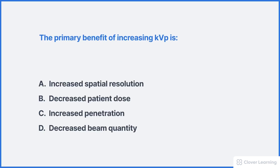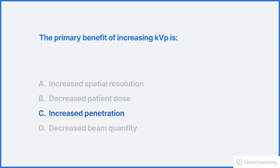Let's check our understanding of kVp's effect on beam quality. The primary benefit of increasing kVp is increased penetration. None of the other answer options are true. If we increase kVp, this has no effect on spatial resolution — spatial resolution refers to the sharpness recorded in the radiograph. Increasing kVp actually results in an increase, not a decrease, in patient dose because of the increase in photon quantity. And increasing kVp actually increases, not decreases, the beam quantity. We're assuming only the kVp is changing and the other variables have remained the same.